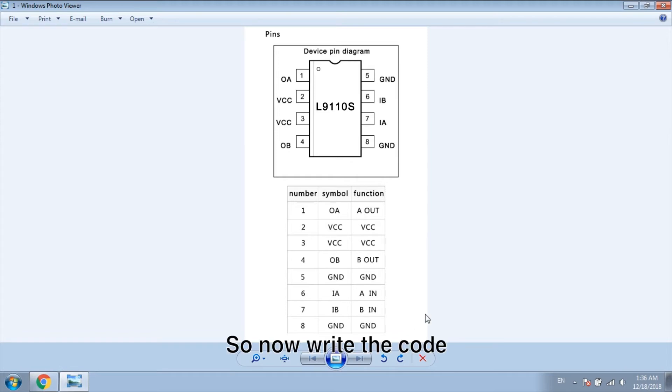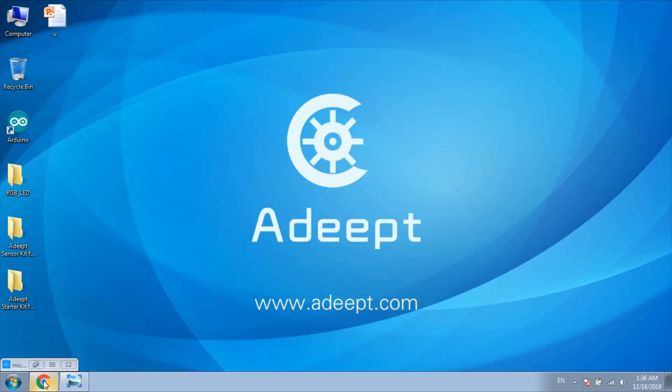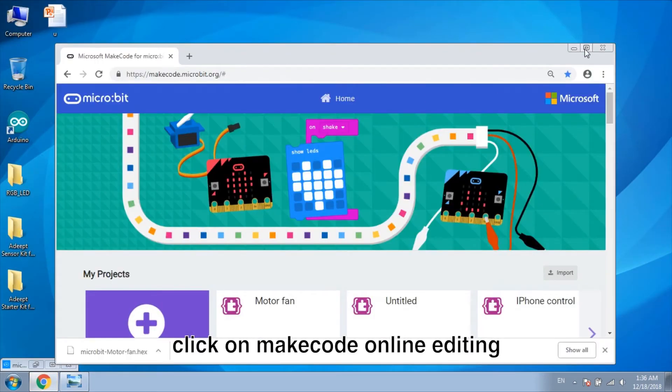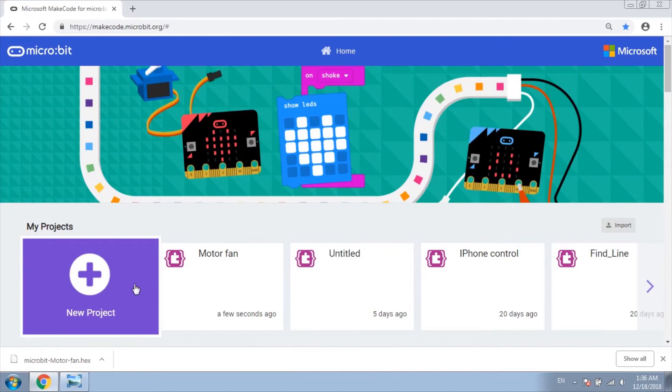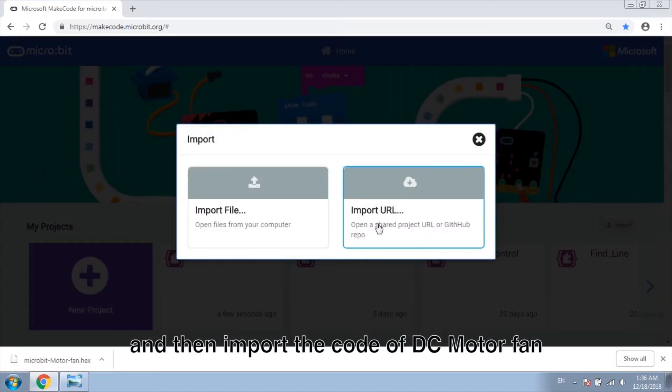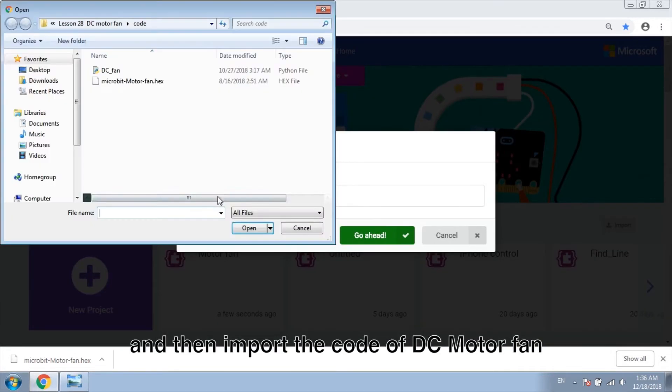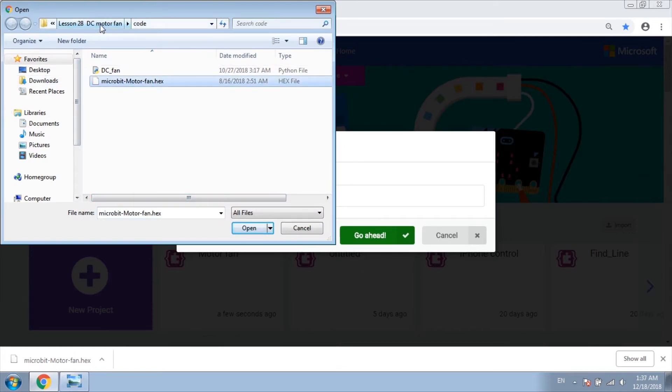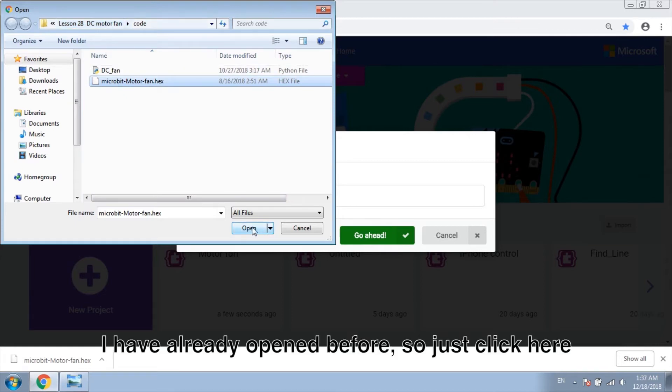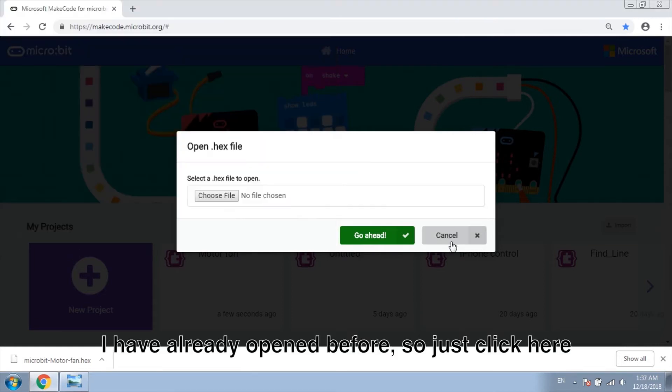So now write the code. Open Google, click on MakeCode Online Editing. And then import the code of DC motor fan. I have already opened before, so just click here.